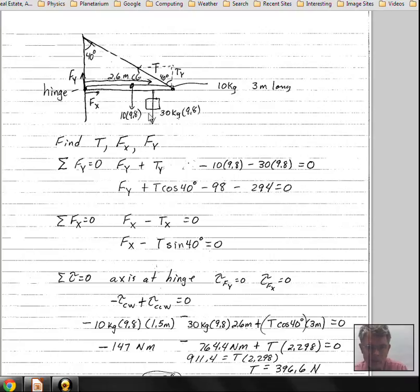In the downward direction, we have the weight of the beam and we have the weight of the extra load that's attached to the beam.